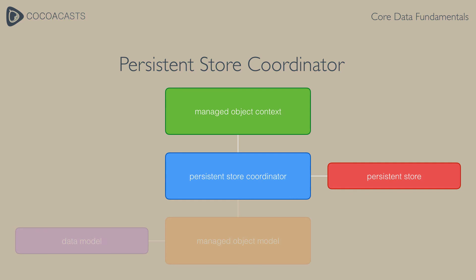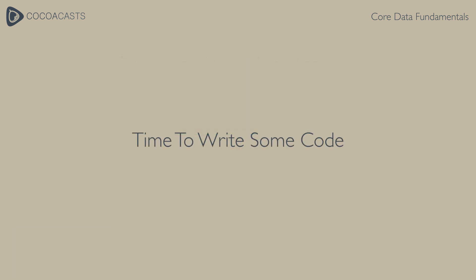The managed object context is used to create, read, update, and delete records. When the changes made in the object context are saved, the managed object context pushes them to the persistent store coordinator, which sends the changes to the persistent store. Now that you know what Core Data is and how the Core Data stack is set up, it is time to write some code. In the next lesson we create a Core Data stack and explore the classes we discussed in this lesson.